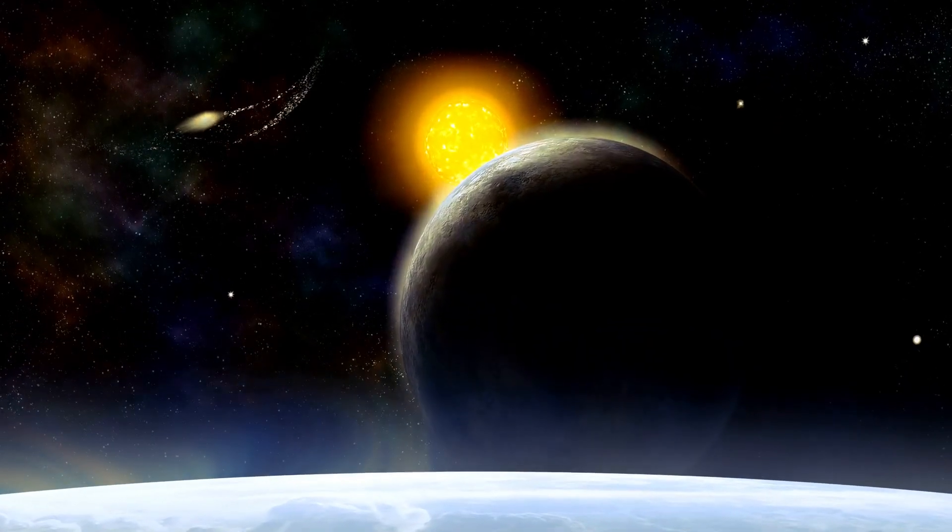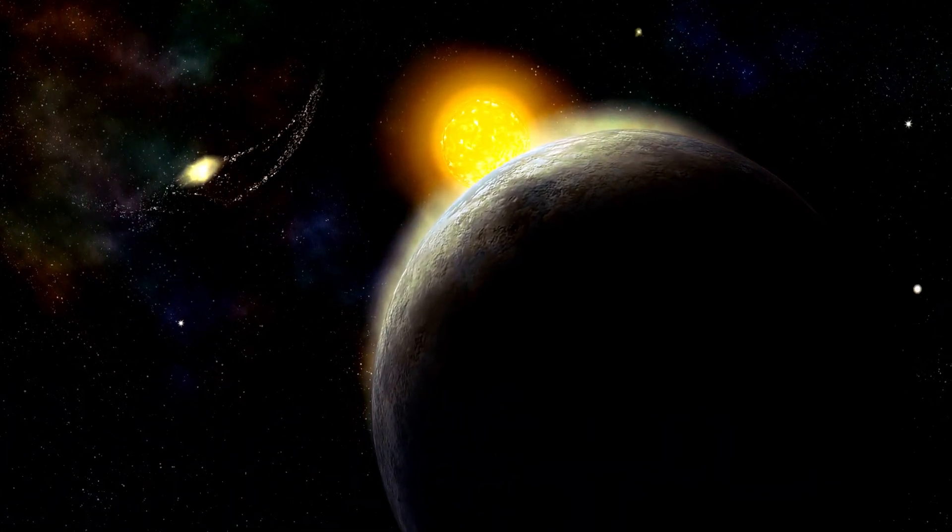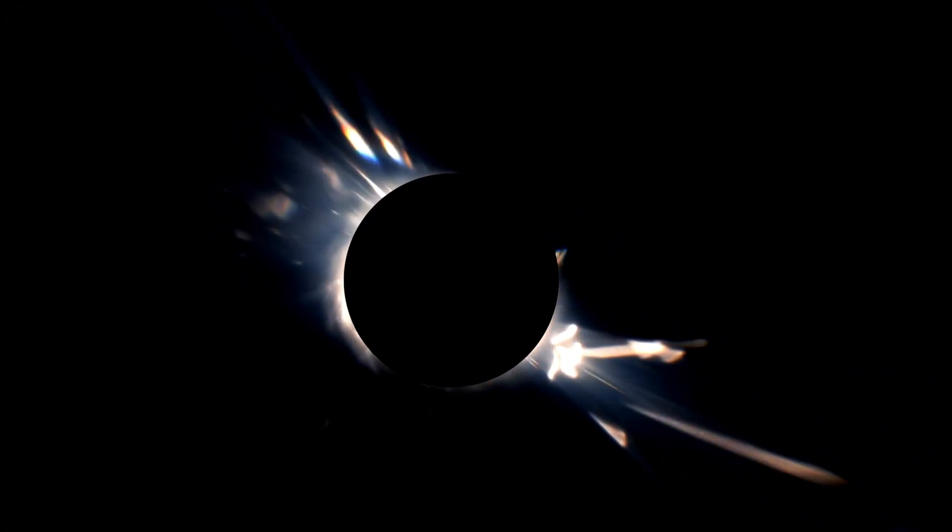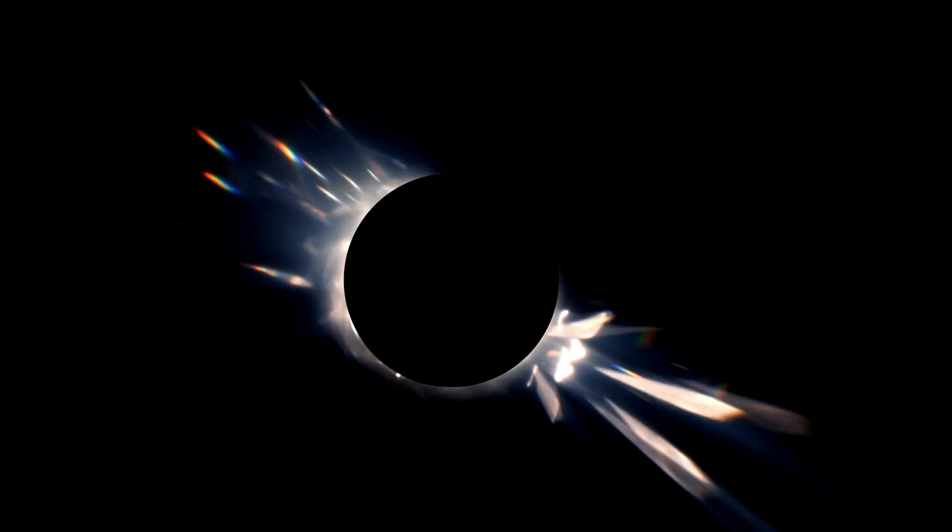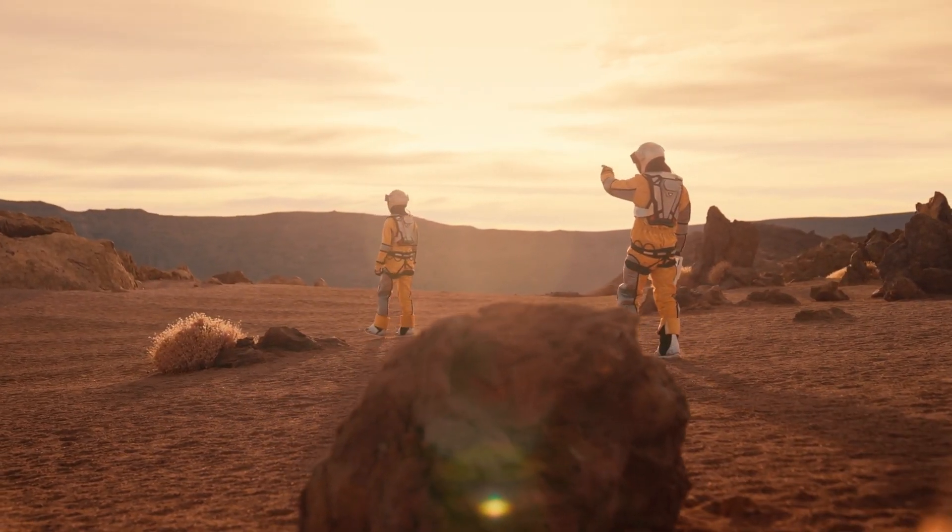The tidally locked nature of Proxima B, with one side permanently facing the star, adds complexity to its climate and potential habitability. While the discovery of life on Proxima B would be groundbreaking, it necessitates careful consideration and thorough analysis of available data.